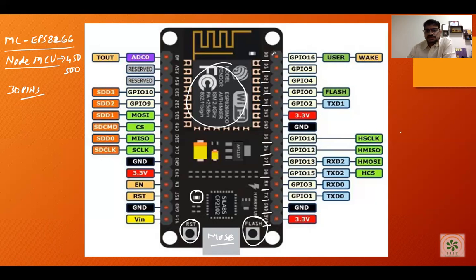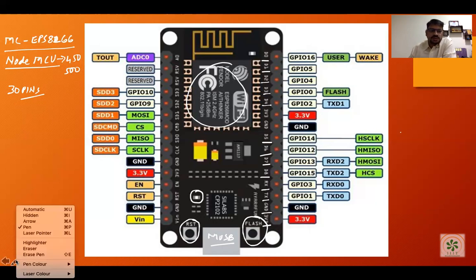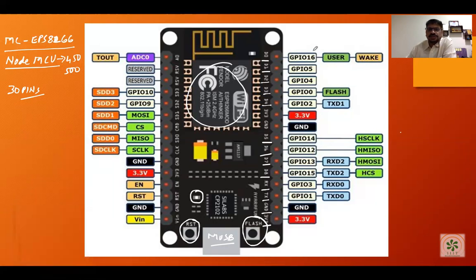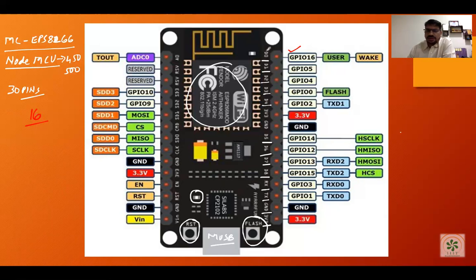If you look at D0 in the board manual, you'll find these are GPIO — General Purpose Input Output — pins with numbers. D0 corresponds to GPIO 16. So when programming, you can use the number 16 or D0, and both will refer to the same pin.